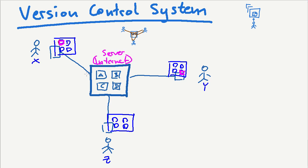Ms. X decides to synchronize this version of file A with the server, and what happens is that the server will update file A. Because no one else touched file A in any way, there is no conflict of versions. For example, if I would also make changes in file A, then the question is which one is the correct file — we'd have to integrate these files into each other. But this is not happening at the moment because no one else touched file A, so everything is fine.